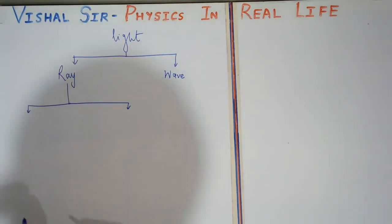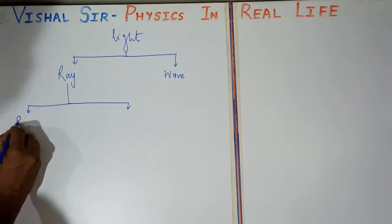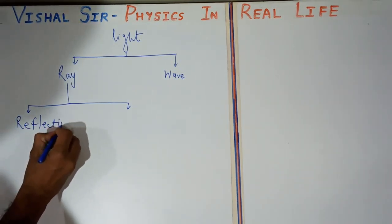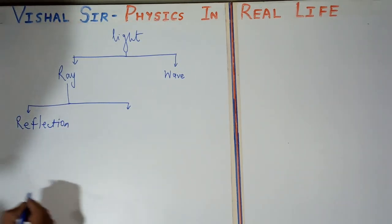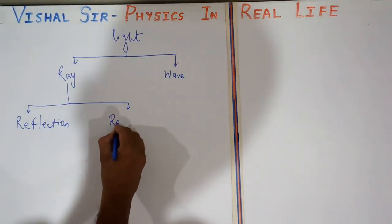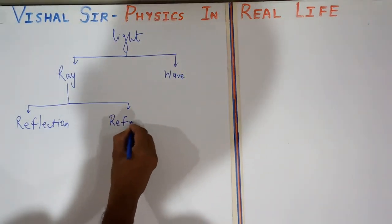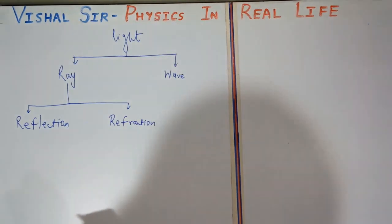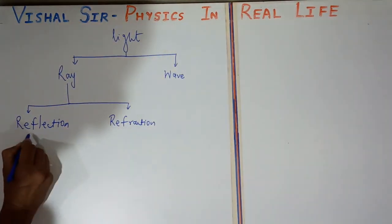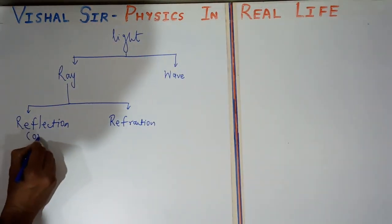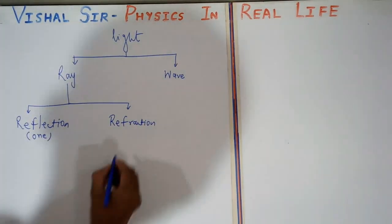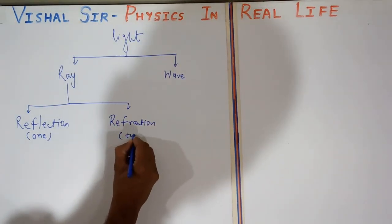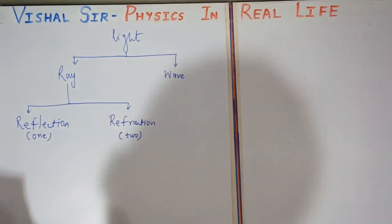The two main phenomena of light are reflection and refraction. For reflection, we require only one medium. For refraction, we require two mediums. This is the main point.